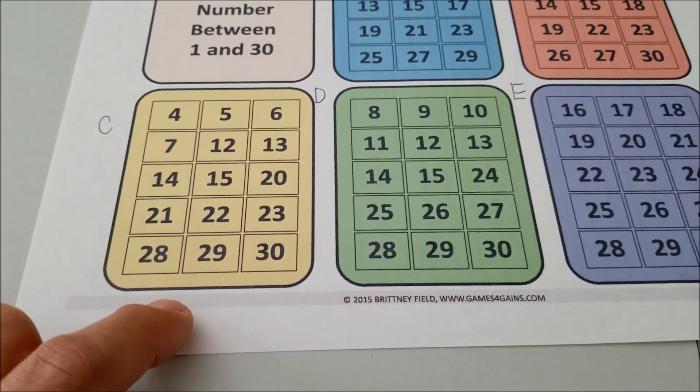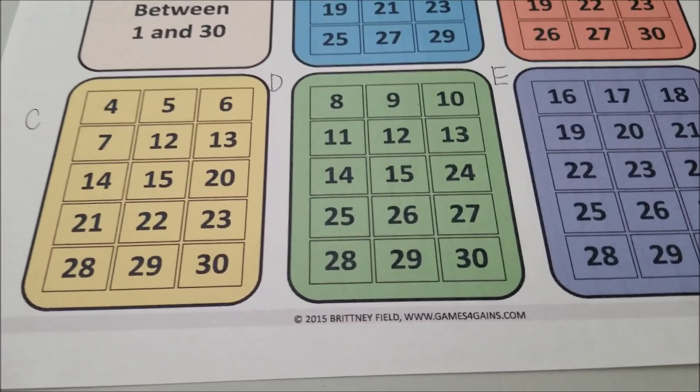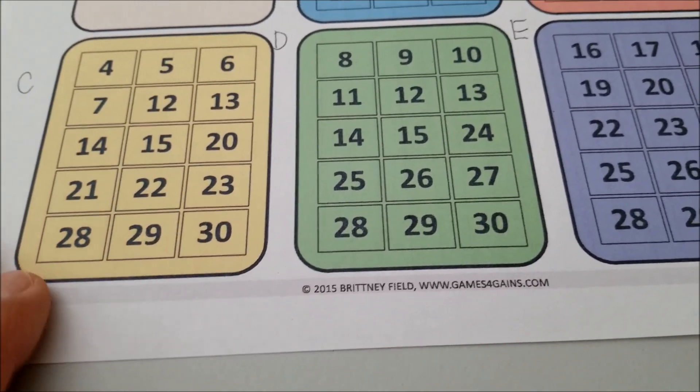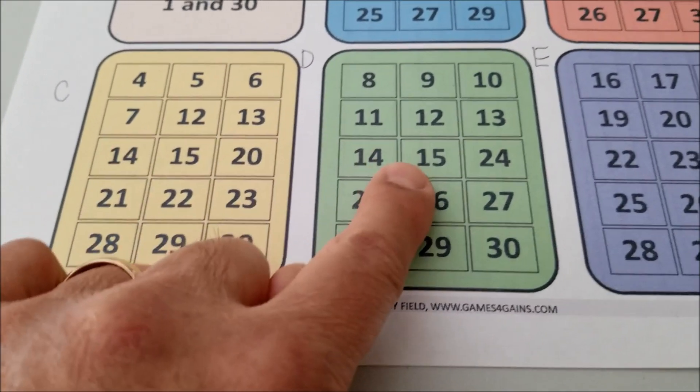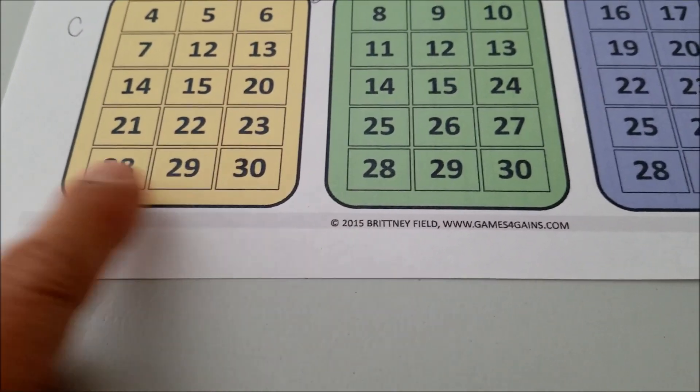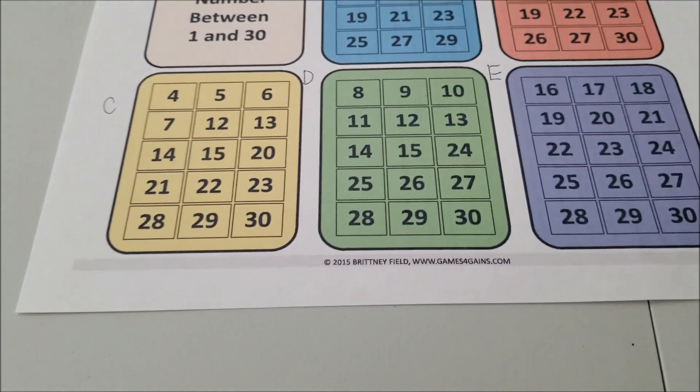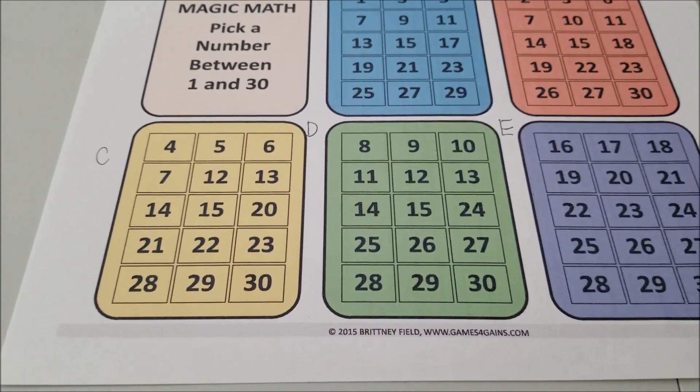Now some of you would go, well, that's not very tricky because there are several numbers where it's in both C and D because look, there's a 14 in C and D. There is a 28 in C and D. So Mr. Hino, why is this so tricky?